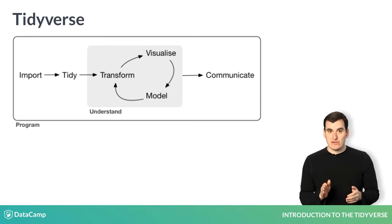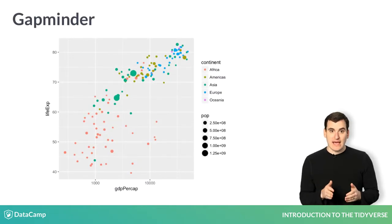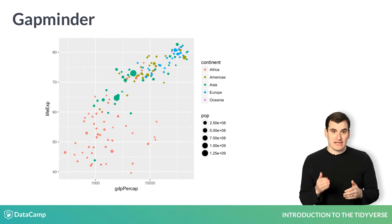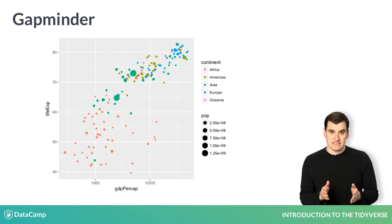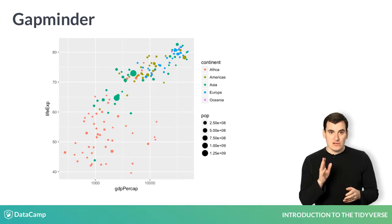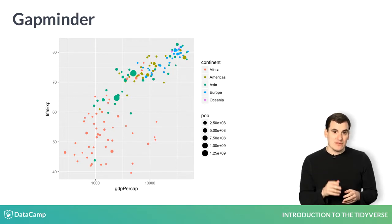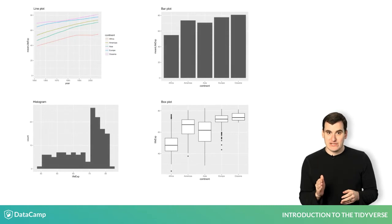At every step, you'll be analyzing a real data set called Gapminder. Gapminder tracks economic and social indicators like life expectancy and the GDP per capita of countries over time. The experience you gain on this example will help you in analyzing your own data. You'll learn to draw specific insights and communicate them through informative visualizations with the ggplot2 package.